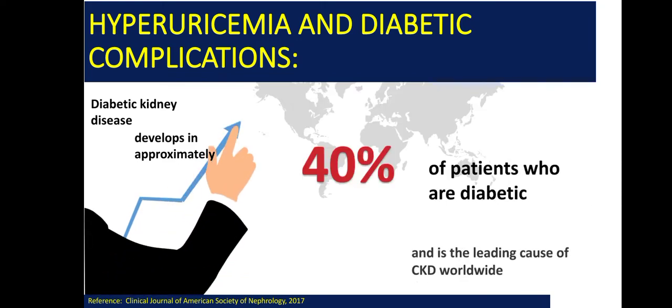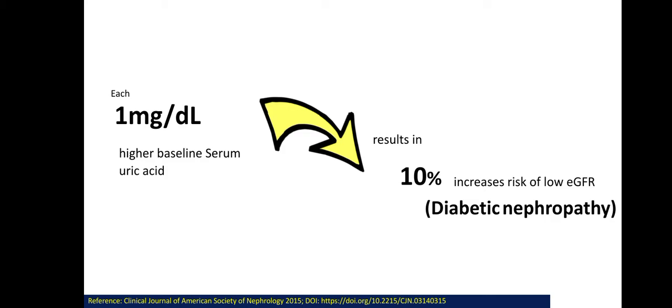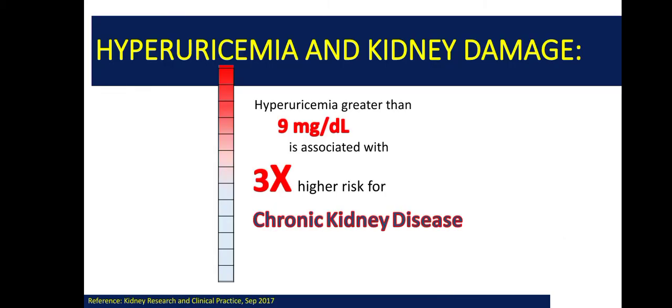Now, hyperuricemia and diabetic complications. Diabetic kidney disease develops in approximately 40% of diabetic patients and is a leading cause of chronic kidney disease worldwide. Each 1 mg/dL higher baseline serum uric acid results in a 10% increased risk of low eGFR or diabetic nephropathy. Hyperuricemia greater than 9 mg/dL is associated with a 3 times higher risk for chronic kidney disease, per a study published in 2017.